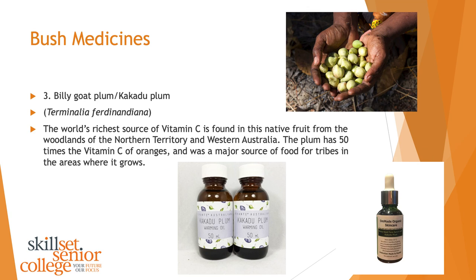Kakadu plum — also known as billy goat plum — is the world's richest source of vitamin C. It's a native fruit from the woodlands of the Northern Territory and Western Australia, and has 50 times the vitamin C of oranges. It was a major source of food for tribes in the area where it grows. You can get this as an extract or oil — I've actually had it flavoured in a lion's mane extract supplement, which has been proven to help with neural growth in the brain.